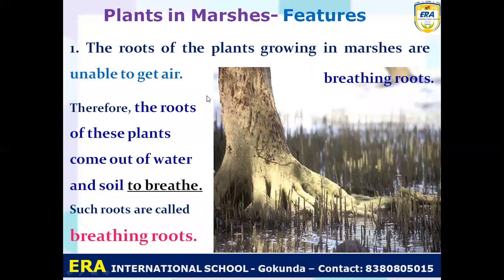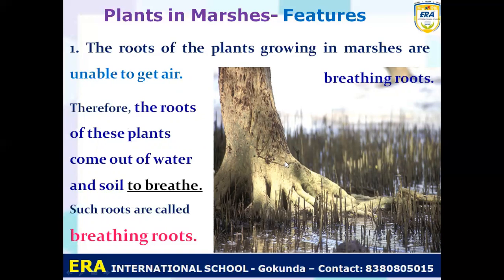The first feature of marsh plants is breathing roots. The roots come out of the soil because in areas with a lot of water the roots cannot get air. Therefore the roots come out of the water and soil to breathe. Roots that come out of the soil and water to breathe are called breathing roots. Plants that have breathing roots are those found in marshes or wetlands.